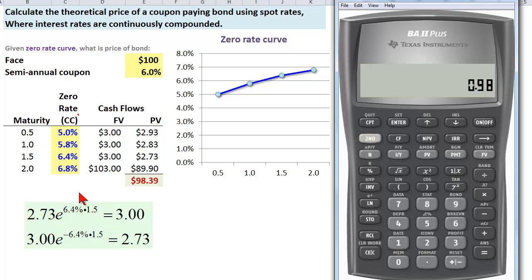So that's just this part here - that's e raised to my negative five percent times 0.5. I want to multiply that by the actual cash flow so I say times the three dollar cash flow and it equals two dollars 93 cents. So I have the present value of that coupon discounted continuously at the relevant spot rate.